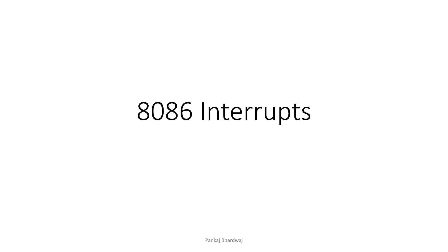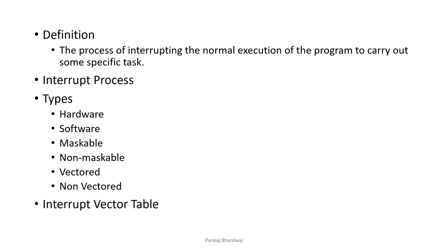Let's discuss 8086 interrupts. An interrupt is a process of interrupting the normal execution of the program to carry out some specific tasks. That specific task is known as the interrupt service routine. It is generated by an external signal from peripheral devices, or interrupt signals may be generated by special instructions in the program, or it may be internally generated due to some exceptional conditions while executing instructions.